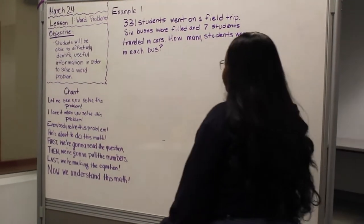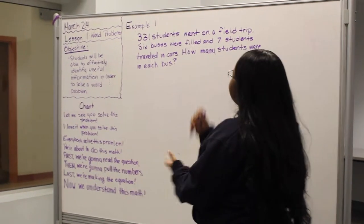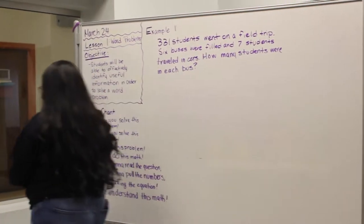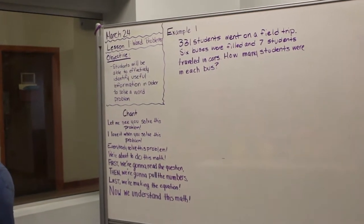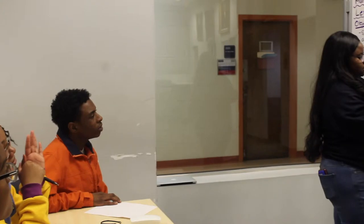Alright, so now the next step is to identify the most important parts that you need to solve the question. So can someone tell me what they think is an important part of the equation? Three, three one, 331 students. Alright.